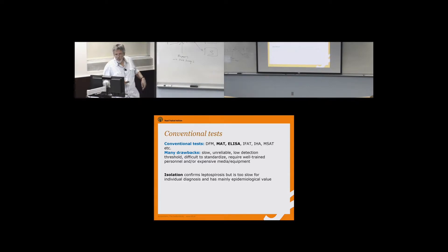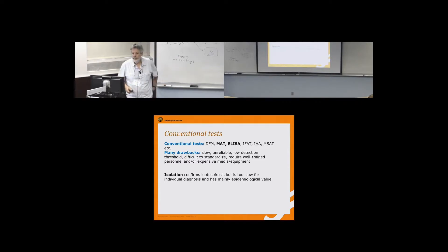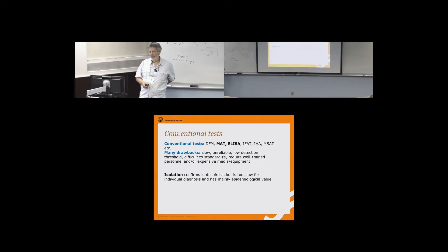I'd like to ask a question related to transmission. Human patients with leptospirosis actually produce quite a lot of live leptospires in their urine — maybe 10 to the 6th per ml, sometimes higher. Yet, looking back at the literature, there has been no documented case of nosocomial infection, even in developing-country hospital settings where urine is widespread.